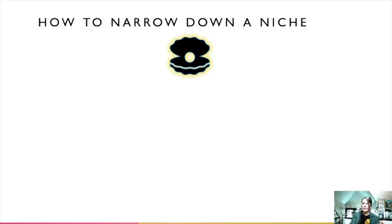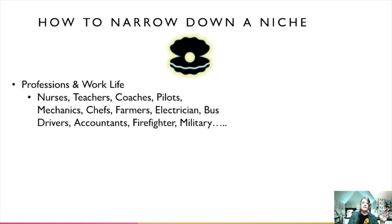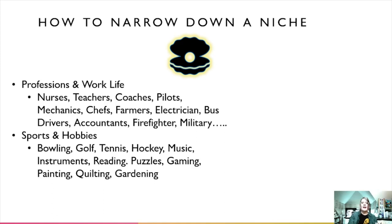How to narrow down a niche — finding the pearl of niches. First place you can look: professions and work life. There are thousands upon thousands of professions. Think about who the people around you are and what they do for a living. And of course, there are all the sports and hobbies — aside from obvious sports, think about bowling, golf, tennis, hockey, and hobbies like music, instruments, reading, puzzles, gaming, painting, quilting, gardening. There are so many categories even within these sports and hobbies — it's mind-boggling.